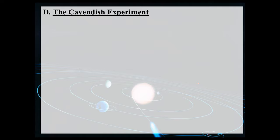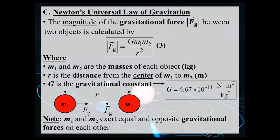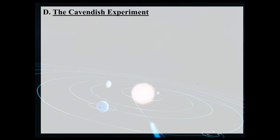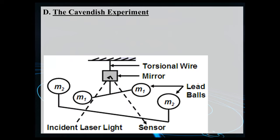We need to talk about the experiment that determined the value for capital G — the Cavendish experiment. Here's the apparatus: we have a couple of large lead spheres, M2, connected to a bar that is fixed to the ground and cannot move.